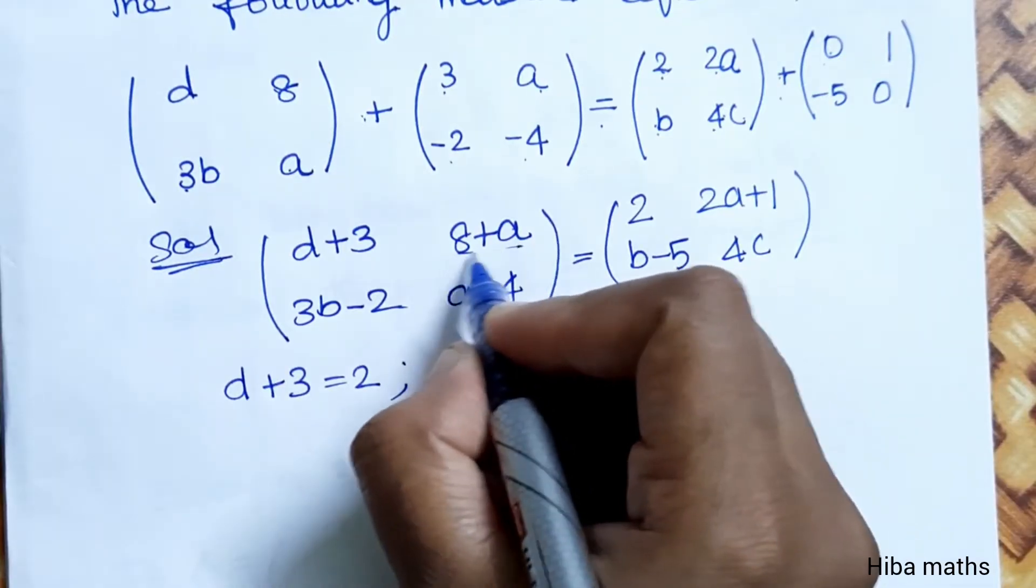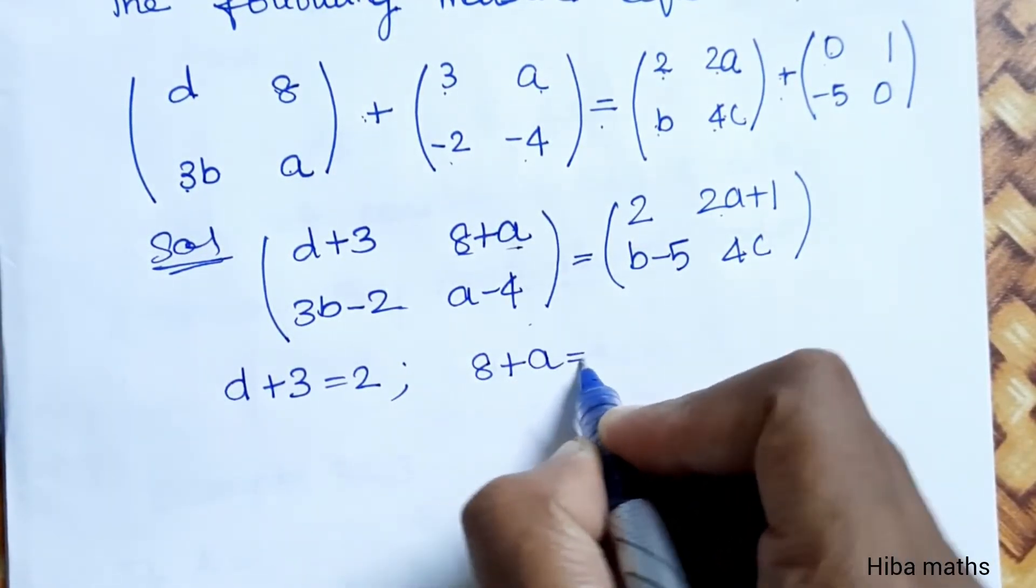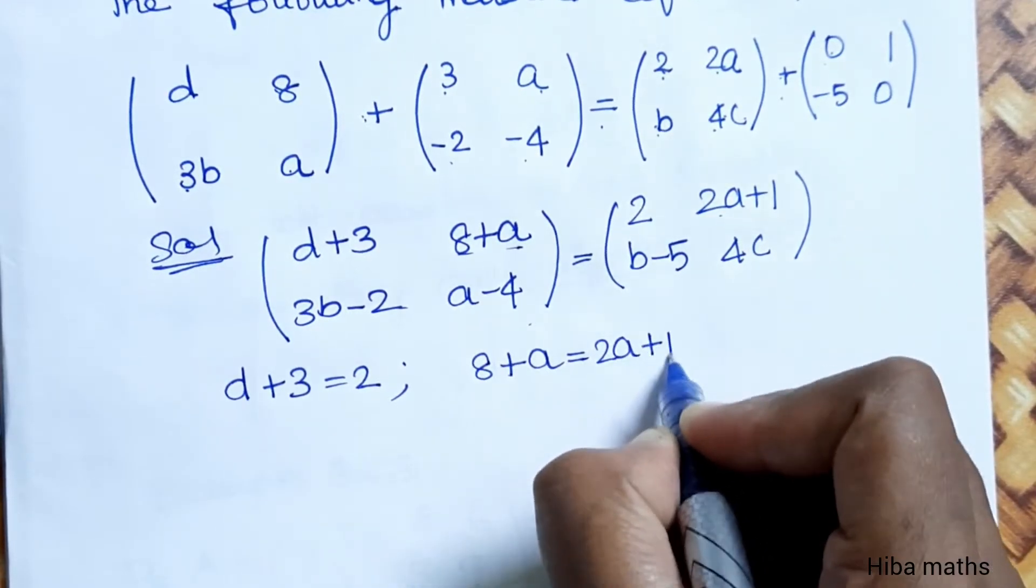First row, second column. First row, second column. 8 plus A is equal to 2A plus 1.